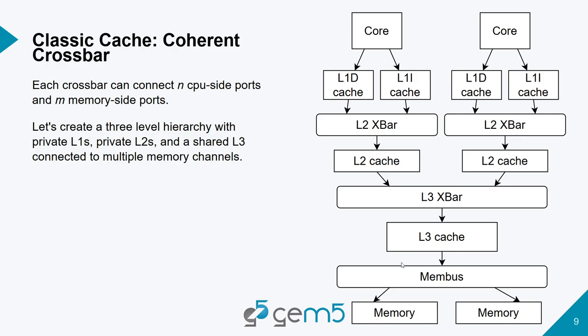In the classic caches, all you can do is build a hierarchy of crossbars. One possible cache hierarchy has each core with a private L1D, L1I, and private L2, and then all cores sharing an L3. This is the example we're going to build.